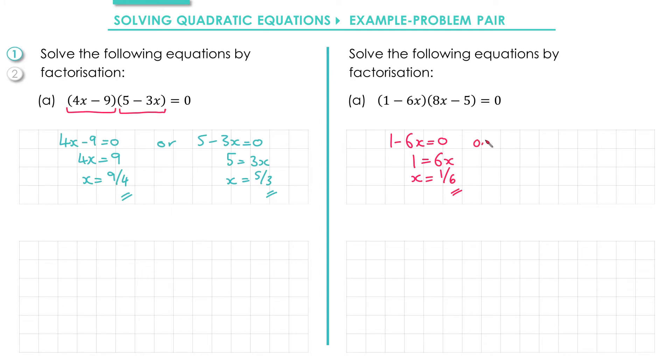Or if the second bracket equals 0 we get 8x - 5 = 0. We could add 5 to both sides to get 8x = 5 and then divide through by 8 to get x = 5/8.